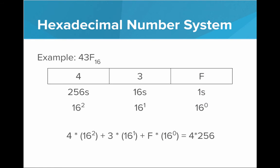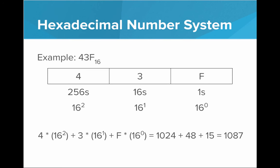So that really means 4 times 256, plus 3 times 16, plus 15 times 1, to get a final value of 1,087. So 43F in hexadecimal is 1,087 in base 10.